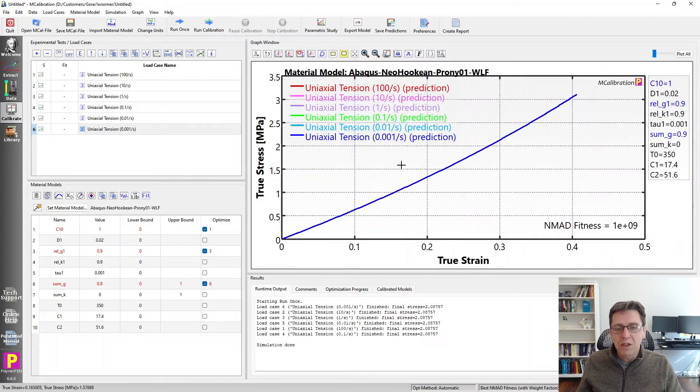We examined the response of this material model at six different strain rates from very high to very slow, but they all came out to be the same. And that's kind of interesting. This is again how this time temperature superposition behaves. It all depends on how you select the time temperature parameters here.